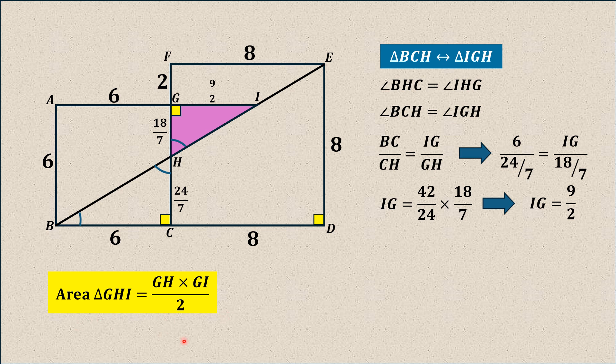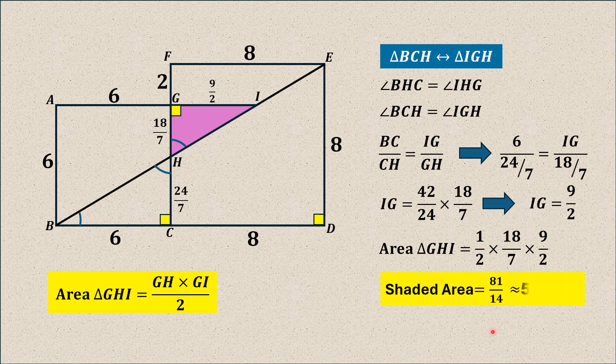And thus, using this formula, we will have area of this shaded region, which is GHI, is equal to half times 18 over 7 times 9 by 2. And if we simplify it, we will get 81 over 14. That is approximately equal to 5.7857 square units, which is the answer.